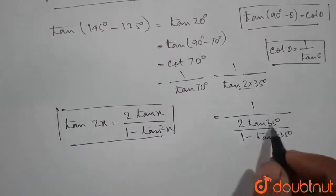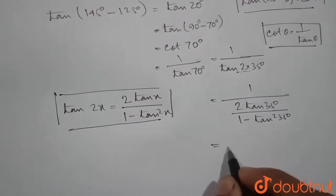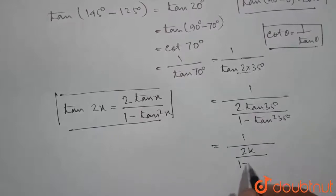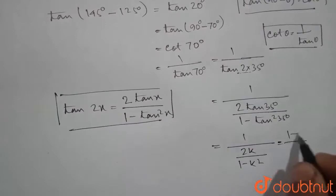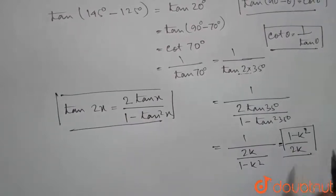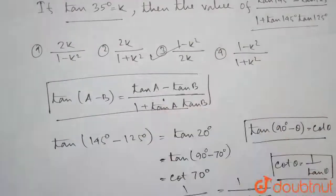We know that tan of 35 degrees is K. So putting the value of tan of 35, we can write 1 by 2K divided by 1 minus K squared, which is equal to 1 minus K squared divided by 2K. So this is our final answer. Looking at the options, third option is correct. Thank you.